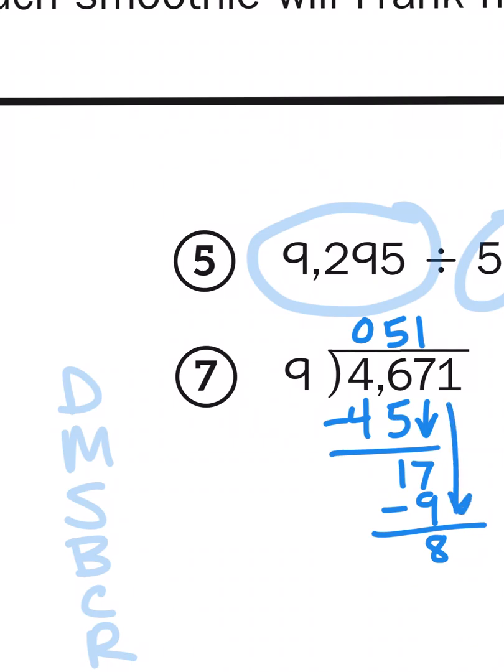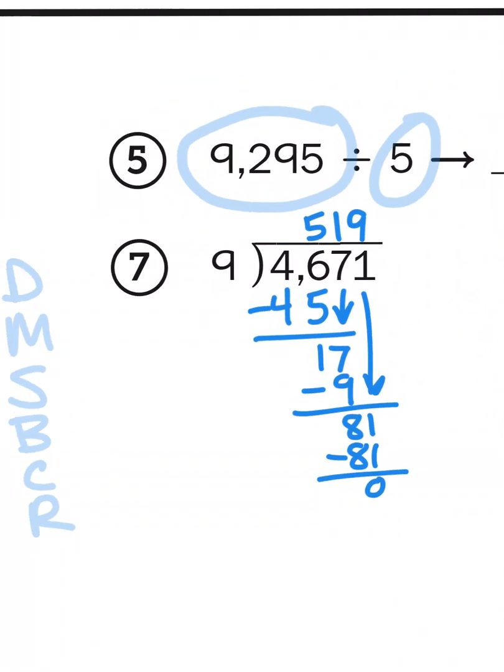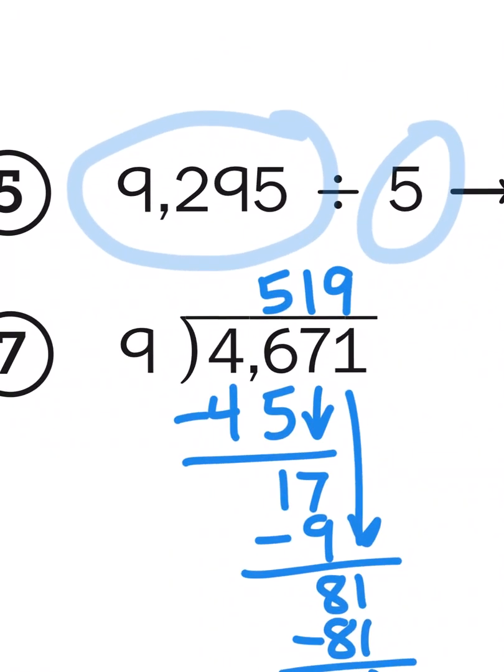I bring down my 1. And now, I'm left with 81, which, of course, is bigger than my divisor. So, again, I repeat the process. Now, at this point, you can see that we're not going to have a remainder because you and I both know that 9 times 9 is 81. 81 is a multiple of 9. So, when I go through the process of dividing, multiplying, subtracting again, I'm left with nothing. There's nothing to bring down. So, my quotient, my answer here, is 519.